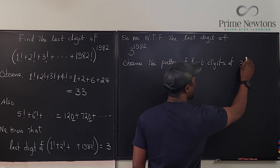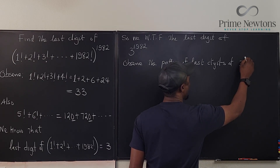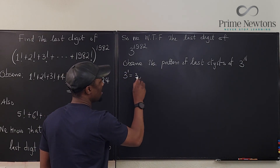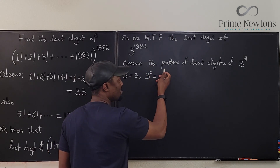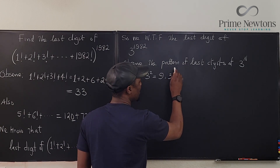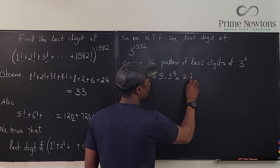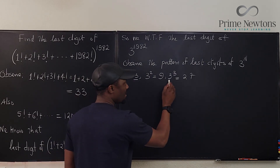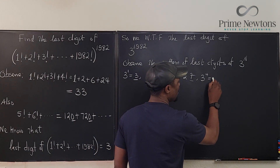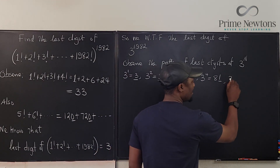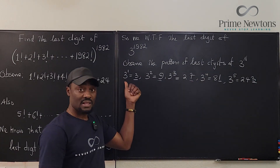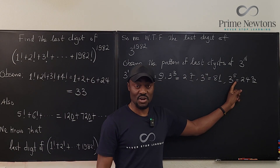The last digit of 3^n follows a clear pattern: 3^1 = 3, 3^2 = 9, 3^3 = 27 (last digit 7), 3^4 = 81 (last digit 1), and 3^5 = 243 — the last digit has gone back to 3. So the last digit of any power of 3 cycles through 3, 9, 7, 1 with a period of 4.